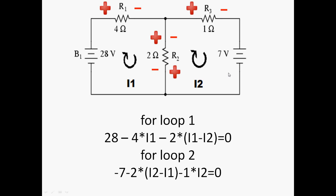Now let us apply KVL to the second loop. For loop 2, we travel from the positive end of the battery to the negative end — that is a fall in potential — so minus 7 volts. Travelling through R2 from positive to negative gives a negative sign, and the fall in potential is 2 times (I2 minus I1), since we are considering loop 2. Travelling through R3 from positive to negative terminal gives a negative sign, and its falling potential is R3 times I2. The sum of all this is zero. So we have two unknowns, I1 and I2, and two equations from loop 1 and loop 2. By simplifying these two equations, we can find the values of I1 and I2.